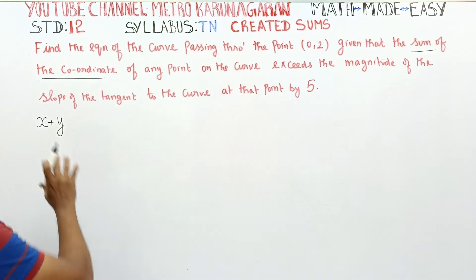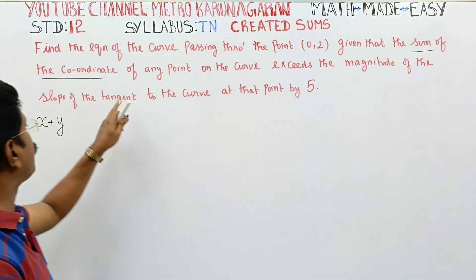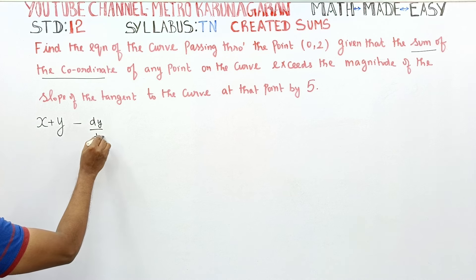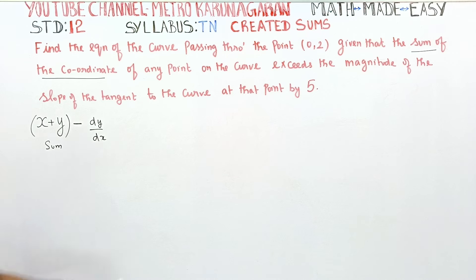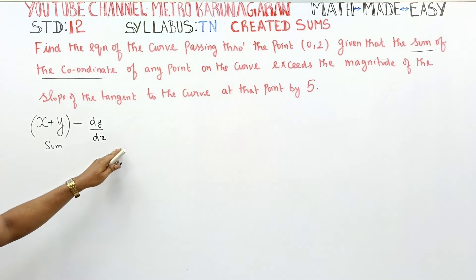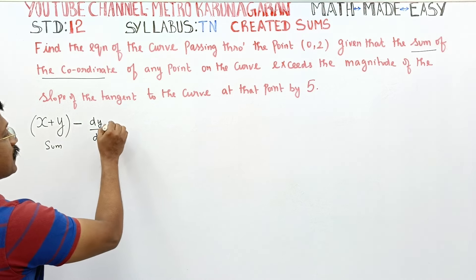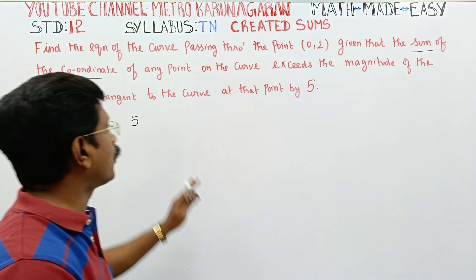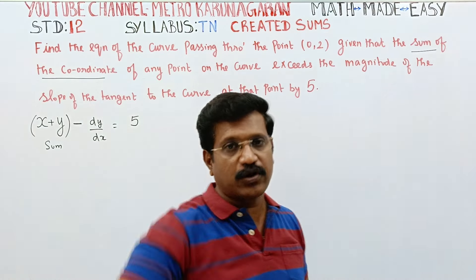Exceeds the magnitude of the slope of the tangent to the curve at that point by 5. The magnitude of the tangent is dy/dx. It exceeds the magnitude of the slope dy/dx.